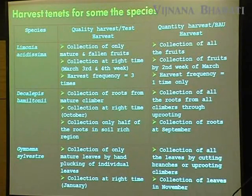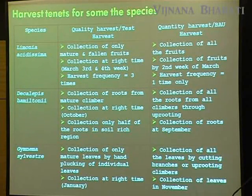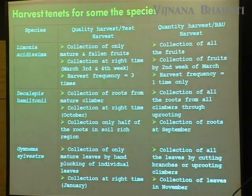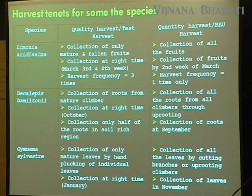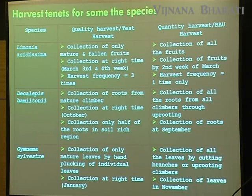After four years of research in the field, we concluded the following. For Limonia acidissima: collection of only mature or fallen fruits is good, collection at the right time is during March third and fourth week, and harvest frequency is only three times. Earlier, they used to harvest all branches along with tender fruits during August itself. For Dacallupis amiltoni: collection of roots from mature climbers, collection at the right time in October, and collection of only off-roots without damaging the whole plant. Earlier they used to collect whole plants including tender seedlings.